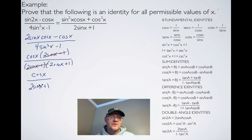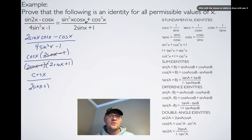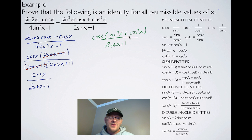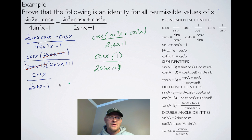The (2 sine x minus 1) terms cancel, leaving cos x over (2 sine x plus 1). Now switching to the right-hand side, I factor out cos x to get cos x times (sine squared x plus cosine squared x), all over (2 sine x plus 1). The Pythagorean identity tells us sine squared x plus cosine squared x equals 1, so substituting that gives cos x times 1 over (2 sine x plus 1), which equals cos x over (2 sine x plus 1). This proves the identity.